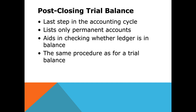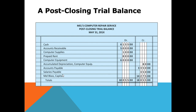In the post-closing trial balance for Mel's, you will only see permanent or real accounts — you will not see revenue, expenses, or withdrawals. You list starting with assets, then liabilities such as accounts payable and salaries payable, then capital. Add up all debits and all credits and make sure the two numbers match. Temporary or nominal accounts — revenue, expenses, and withdrawals — do not appear here.